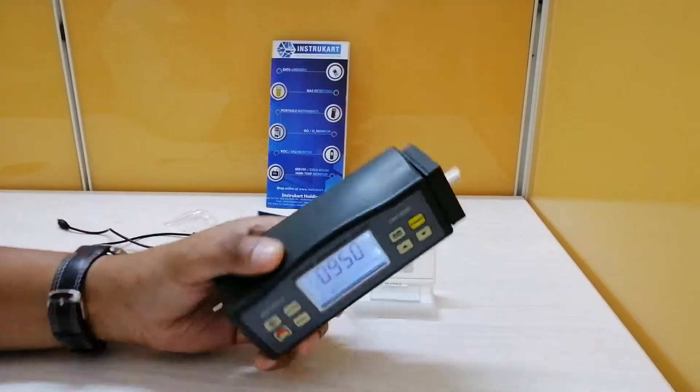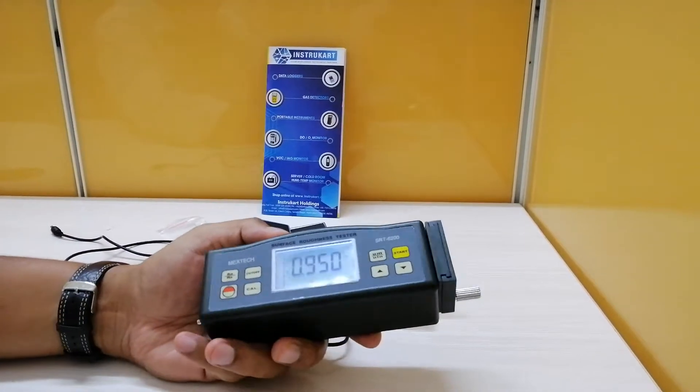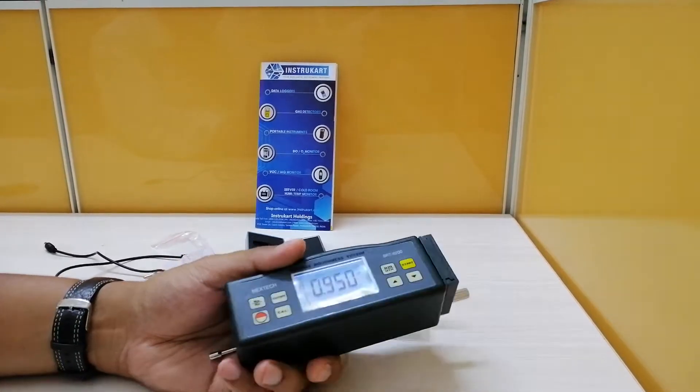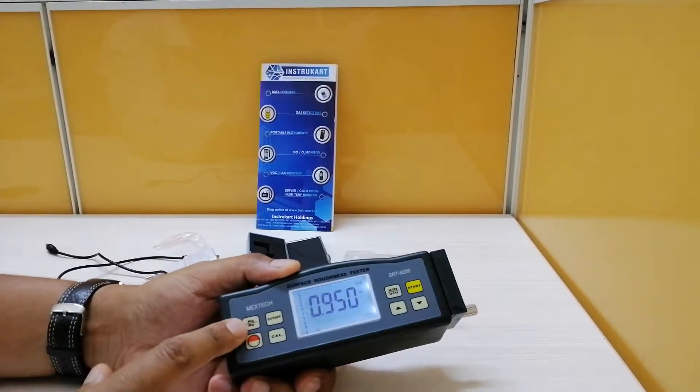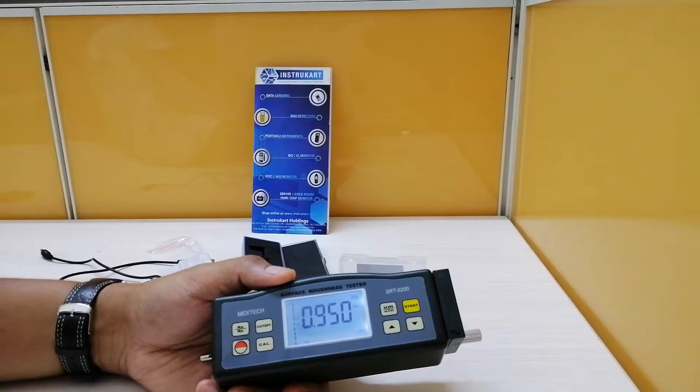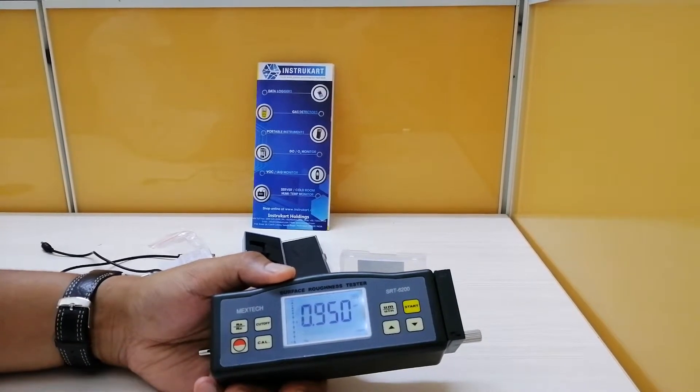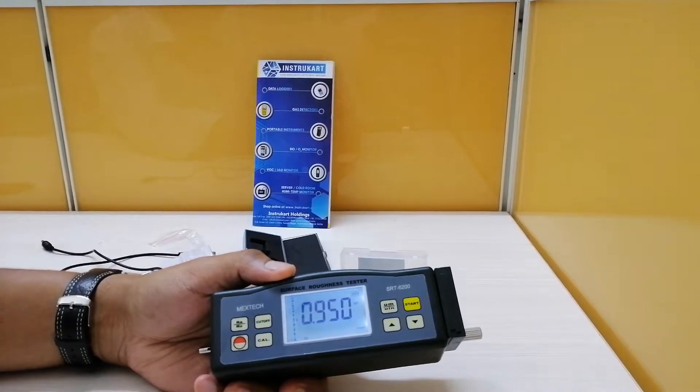Some of the features include: this is very easy to operate. It has multiple parameter measurements, which are RA and RZ, which means you can have an average roughness and you can have an average between the peak and the valley.